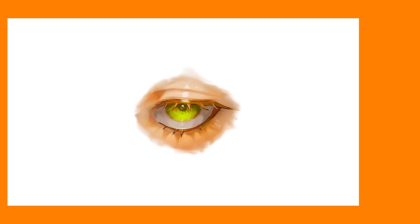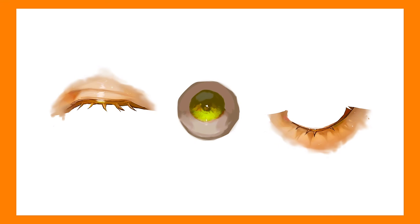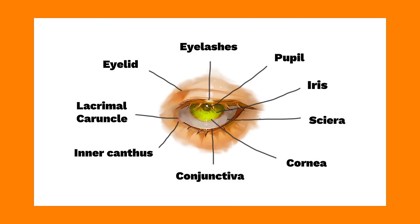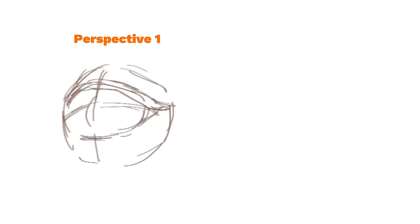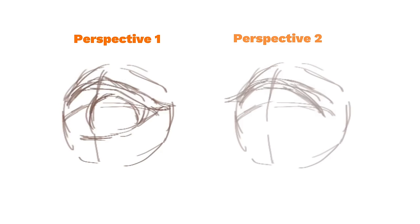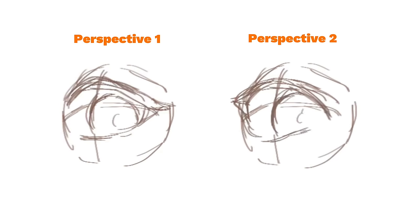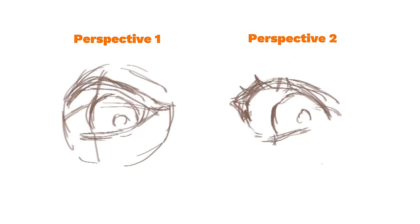The eye mainly consists of three main parts: eyelid, eyeball, and lower eyelid. There's more to point out, but let's make it nice and simple. With this in mind, we know that the eyelid and lower eyelid is wrapped around the eye, so in different perspectives, the eye would take a different shape.